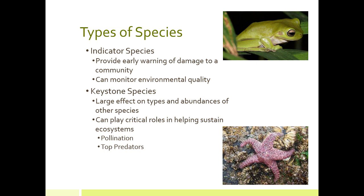Indicator species, like frogs and other amphibians, provide early warning signs when a community is becoming endangered. As discussed in 'The Sixth Extinction,' declining amphibian populations signal broader environmental problems. By monitoring their health, we can assess environmental quality — when their populations drop, it indicates that other species are likely facing the same threats.